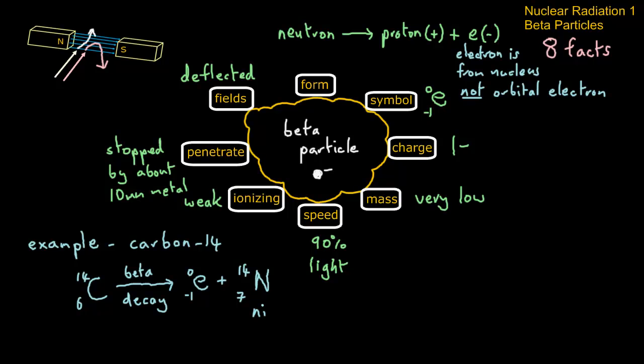And this is nitrogen-14, as found in the periodic table. So that's a quick look at beta particles.